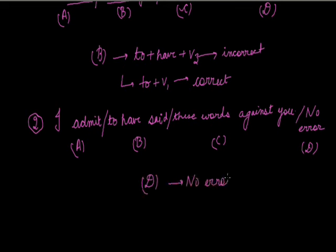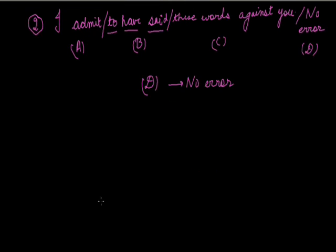The rule here is: if the finite action follows the non-finite action, then instead of using 'to + V1', we use 'to have + V3' as the non-finite verb. That is the perfect infinitive usage.